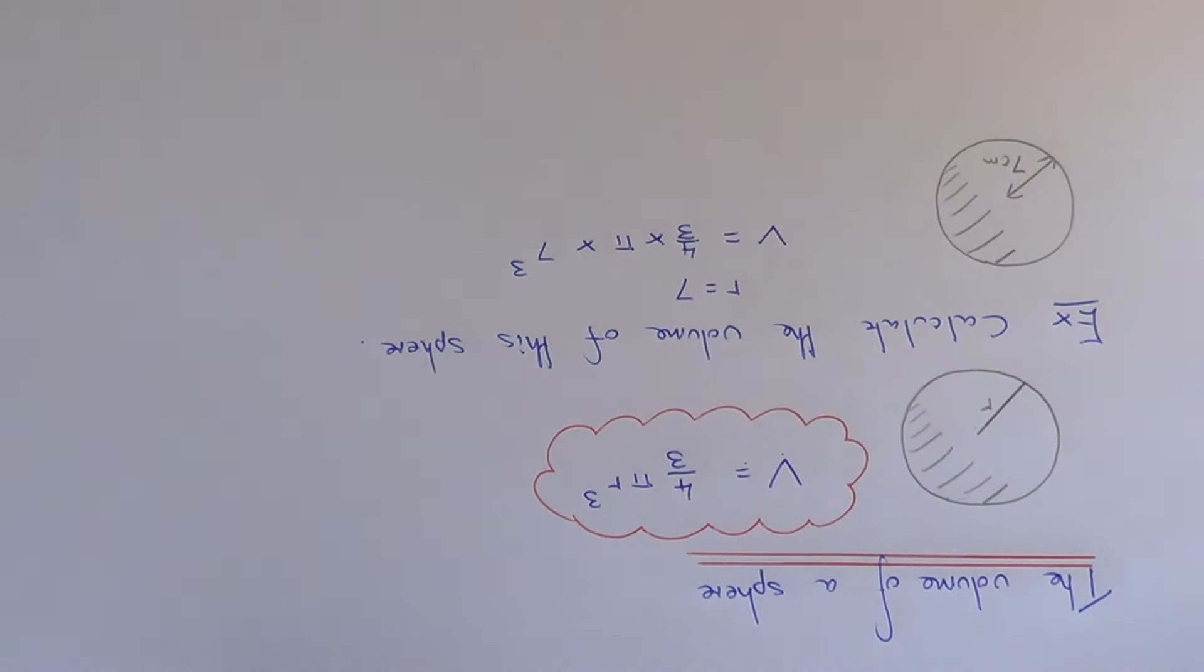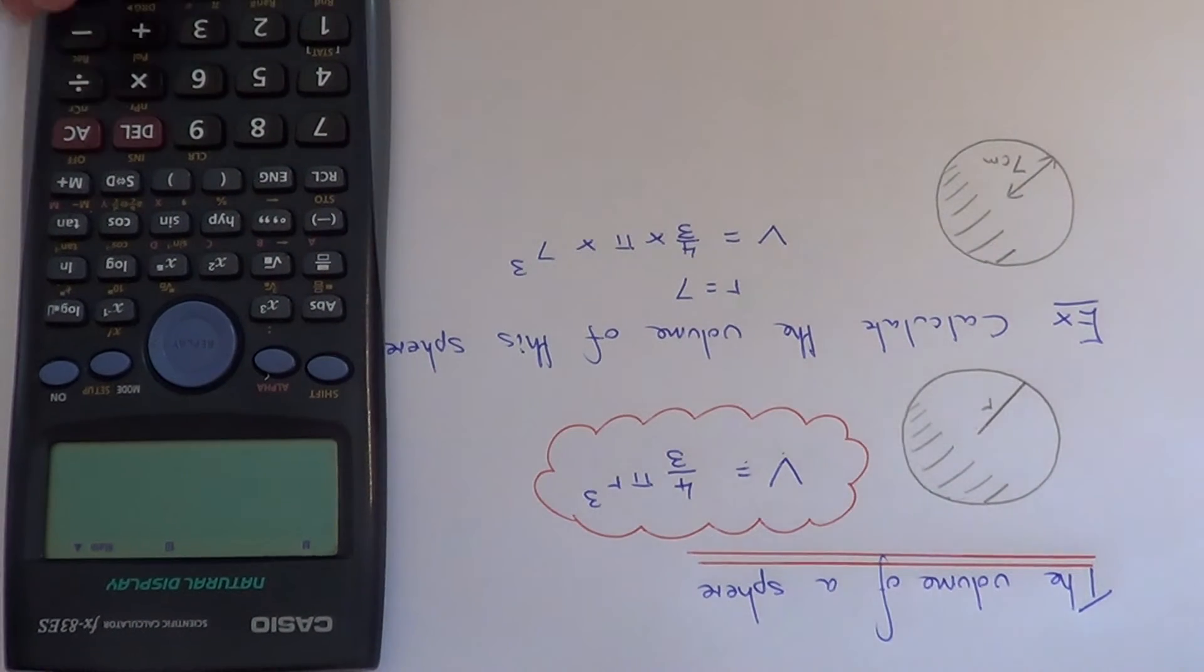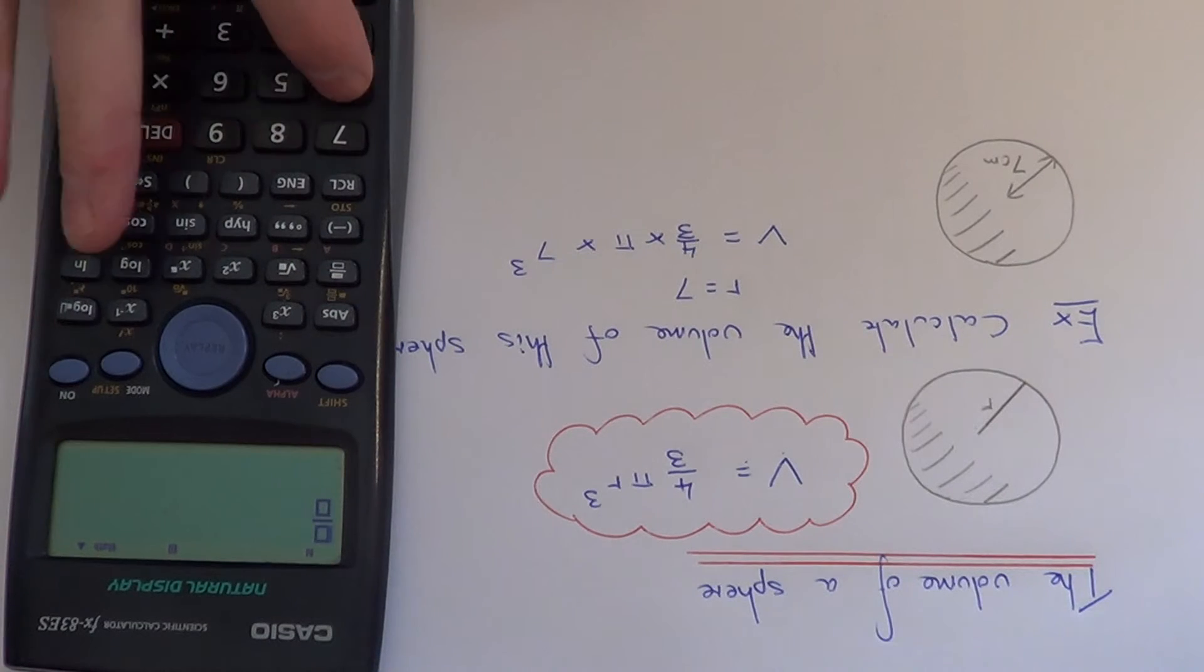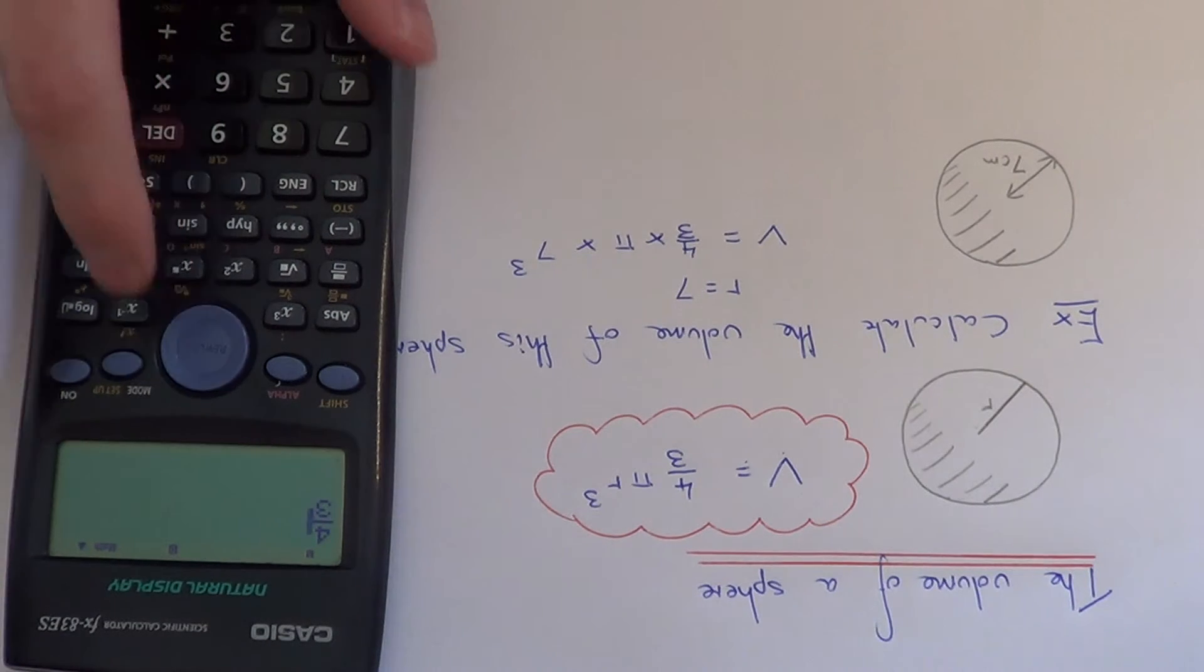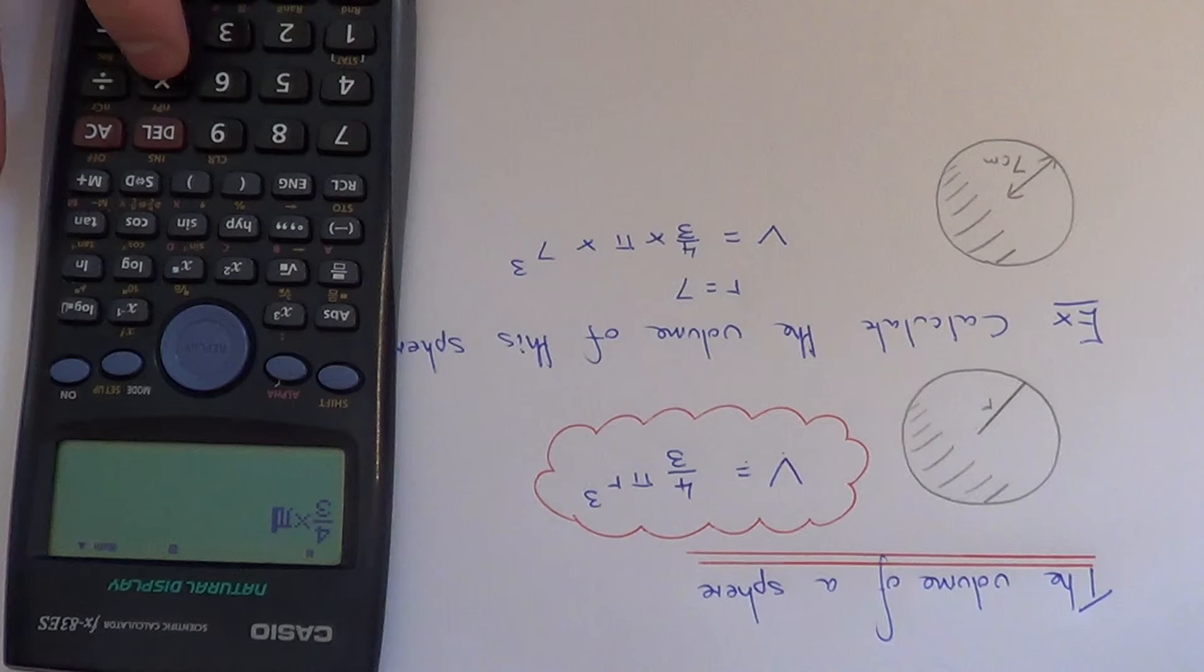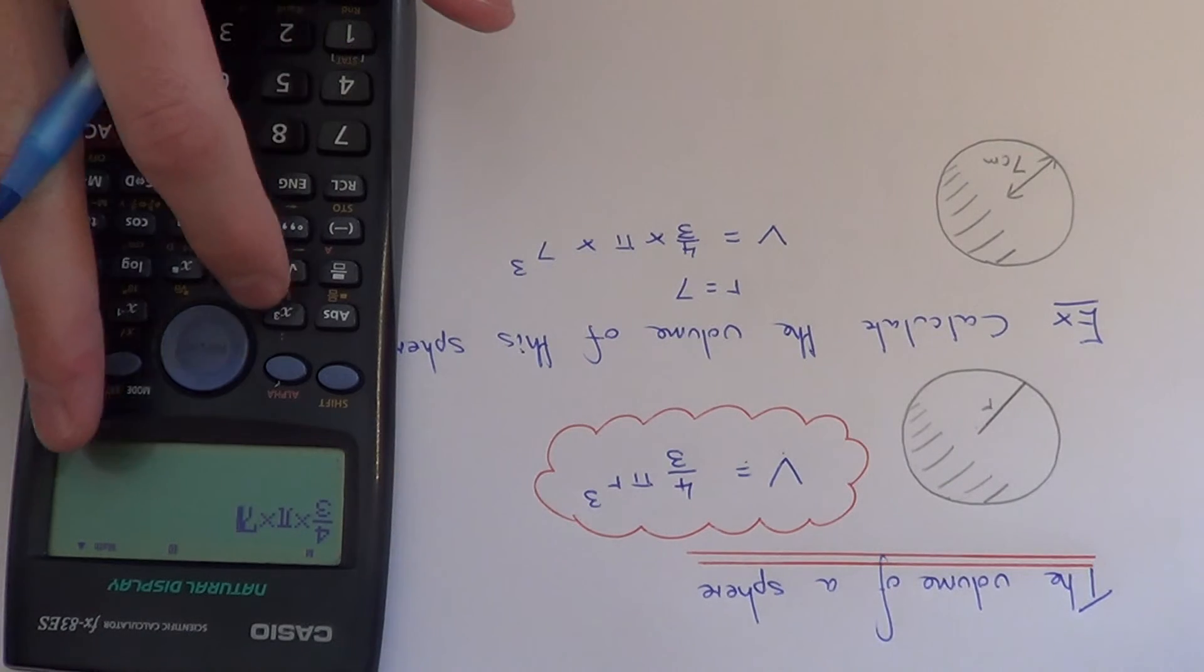If you get your scientific calculator and just type this one in, it would be 4 thirds times pi times 7 cubed.